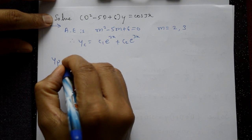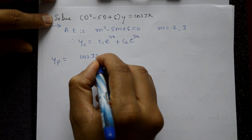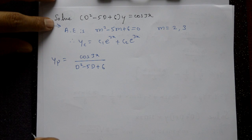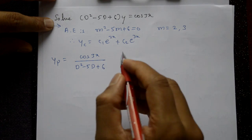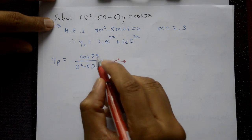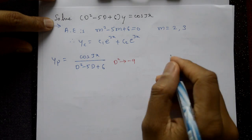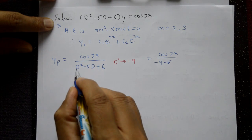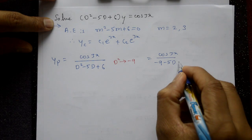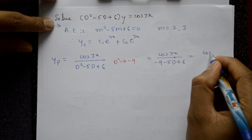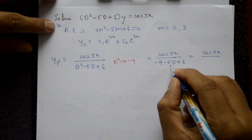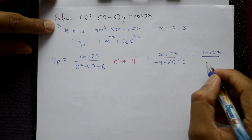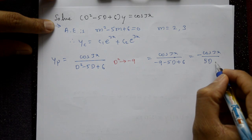Now, the particular integral: yp = cos3x / (D² − 5D + 6). Applying D² = −a² where a = 3, so D² = −9. This gives cos3x / (−9 − 5D + 6) = cos3x / (−5D − 3), and taking minus as a common factor: yp = −cos3x / (5D + 3).